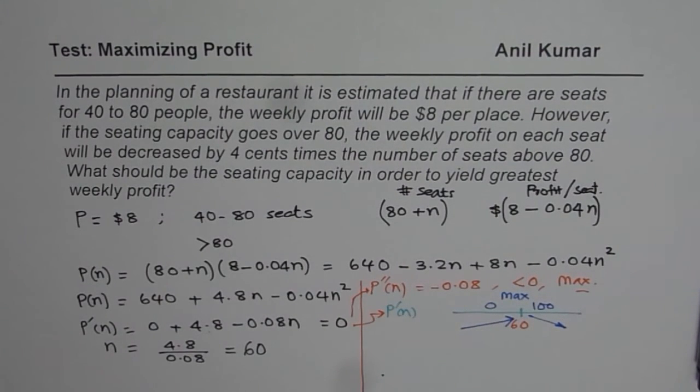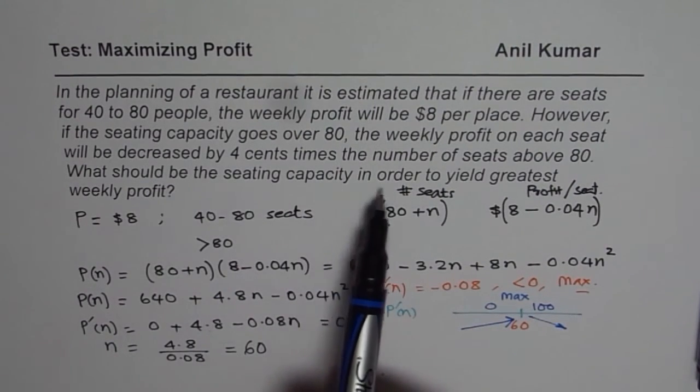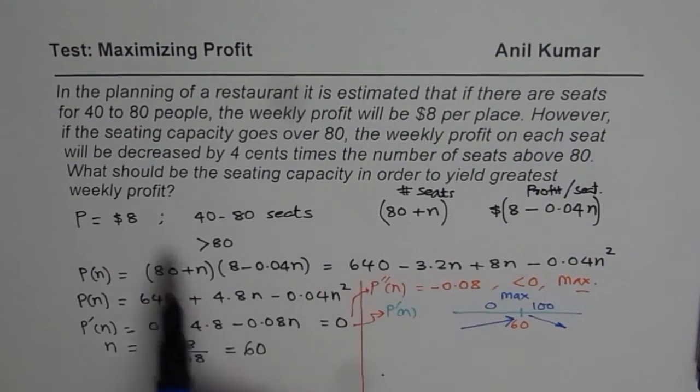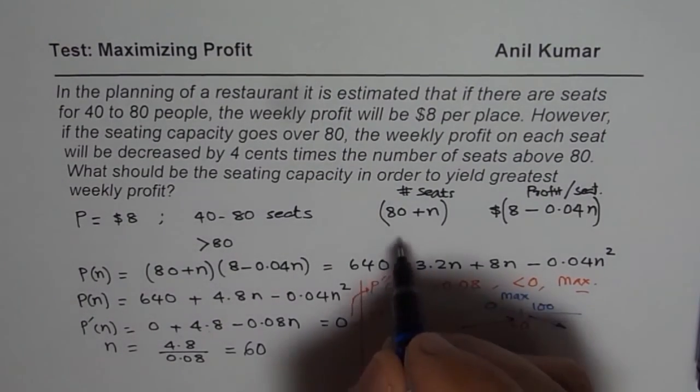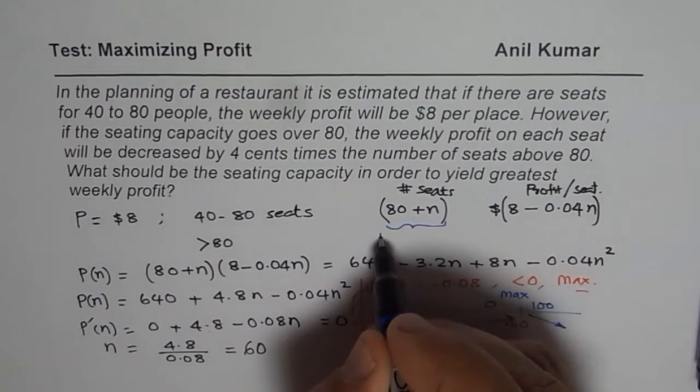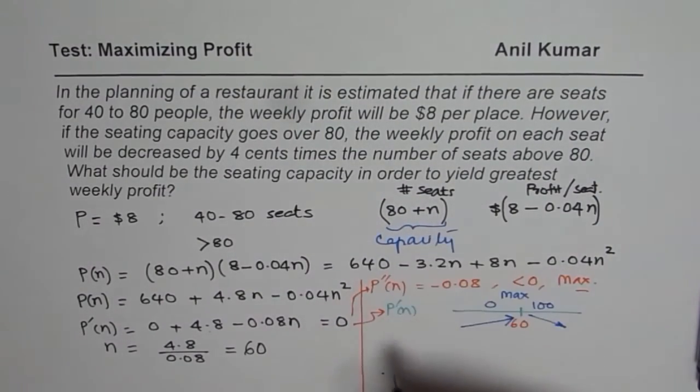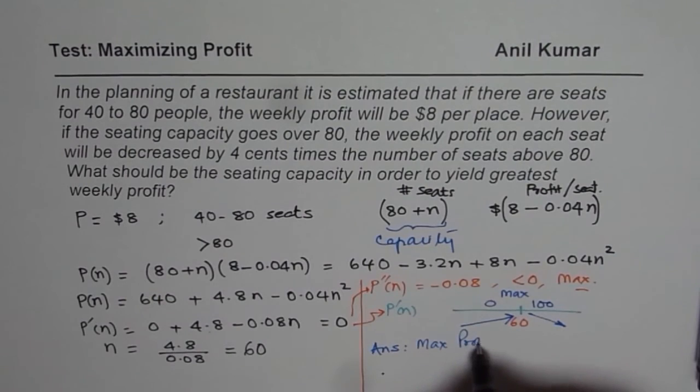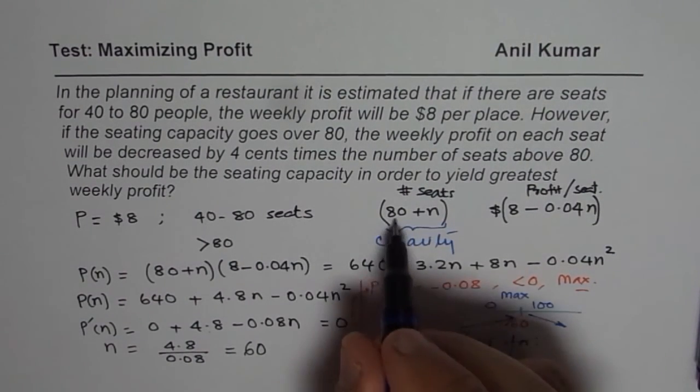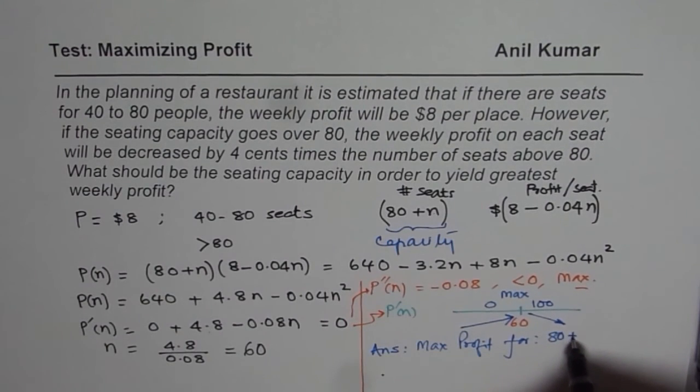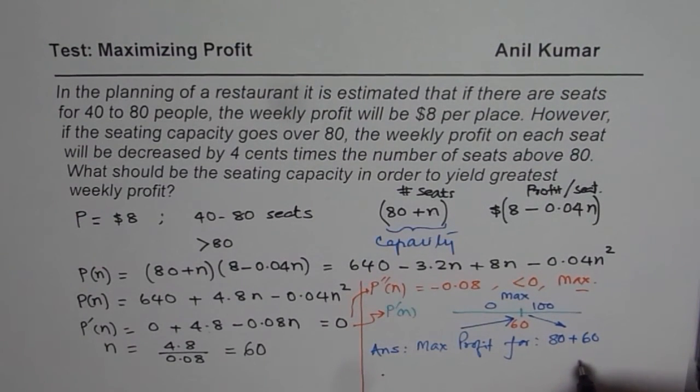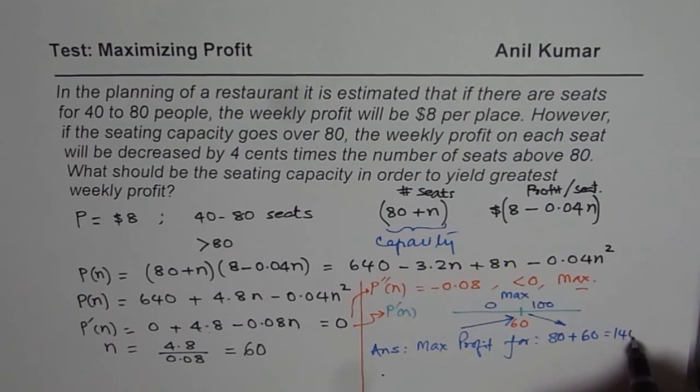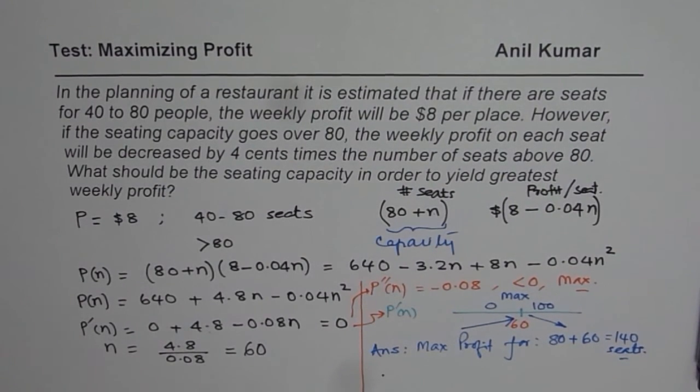Therefore, the profit is maximum. Now read the question once again. What should be the sitting capacity in order to yield greatest weekly profit? So what is the capacity? Capacity is given here. That's the capacity. So the answer should be written in terms of capacity, which is maximum profit for how many seats? 80 plus n. So don't forget to add 60 to 80 to write down your answer. And that gives you 140 seats. So that is the answer.